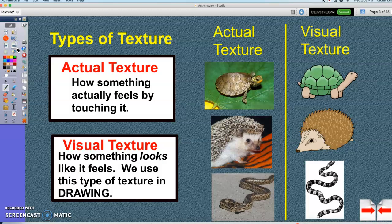We use texture in art all the time, especially visual texture, which is how something looks like it feels. When we're drawing something, we can draw in the bumps on the turtle shell or the little upside down V shapes on this hedgehog to show that it's spiky.